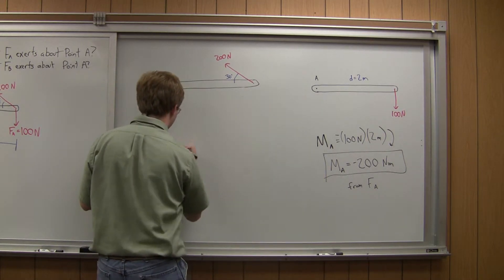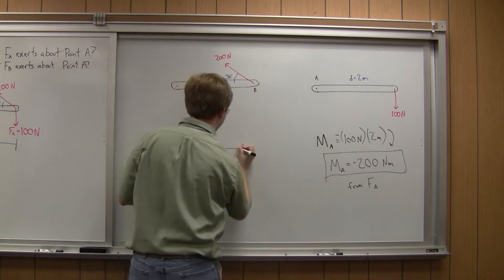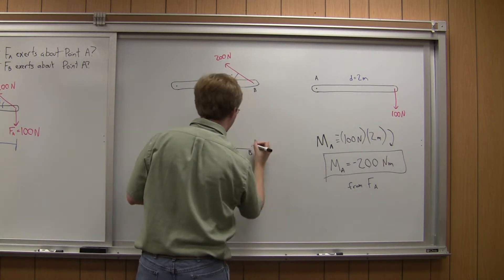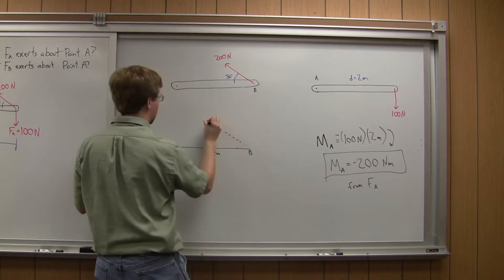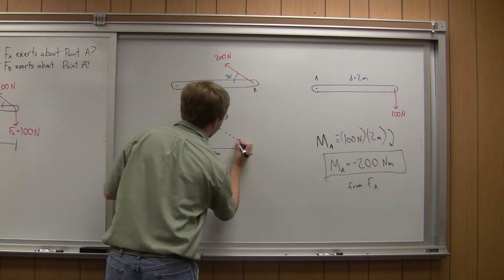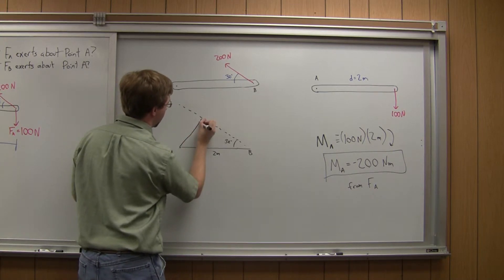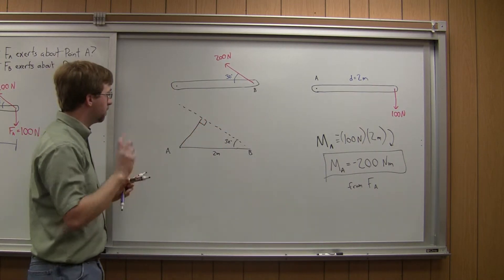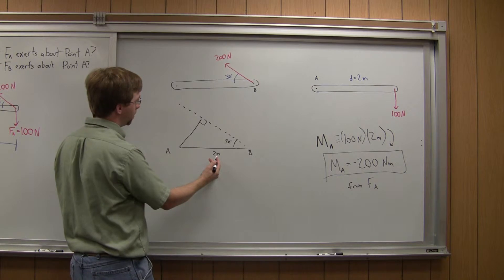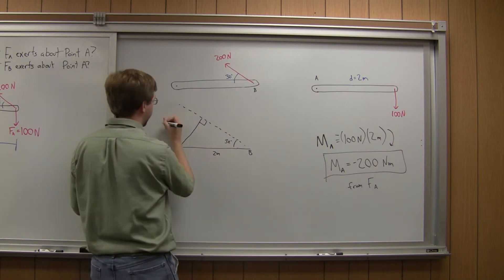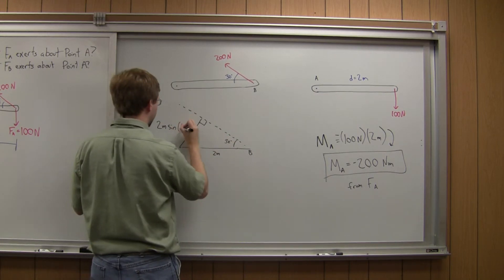So if I drew a triangle, so this is point A, this is, I'll call this B, this is point B out here. This would be 2 meters, but the force is going off at this 30 degree angle. And so the closest it's going to get is going to be when that is at a right angle like this. So we've got a triangle like this, and we know that the hypotenuse is 2 meters. This is 30 degrees, so this is going to be 2 meters times the sine, because it's the opposite side, of 30 degrees.